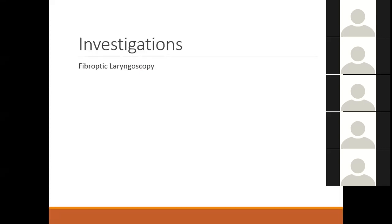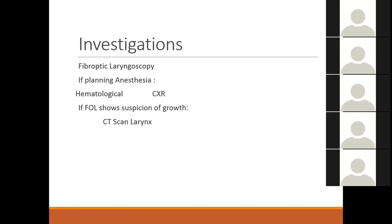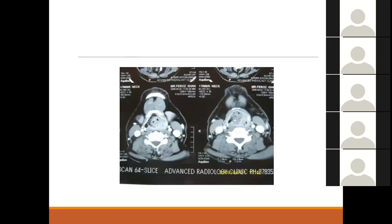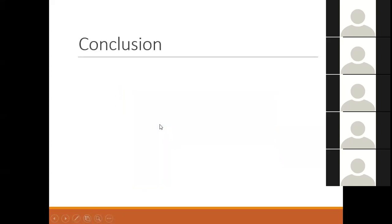When a patient comes with hoarseness, fibreoptic or indirect laryngoscopy is the first investigation — or part of clinical examination. If planning a procedure, common tests include haematological investigations and chest X-ray. If on endoscopy there is suspicion of growth, do a CT scan of the larynx followed by direct laryngoscopy under general anaesthesia for biopsy. A CT scan image shows a large growth in the supraglottic region.